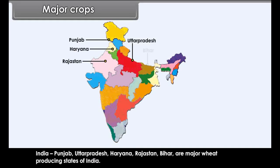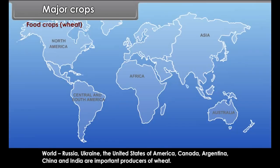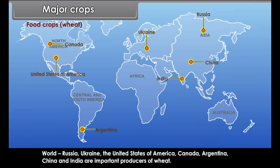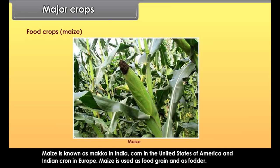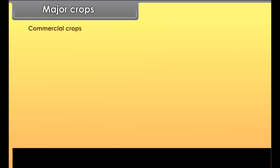Major wheat-producing states of India are Punjab, Uttar Pradesh, Haryana, Rajasthan and Bihar. World producers include Russia, Ukraine, the United States of America, Canada, Argentina, China and India. Maize is known as Makkah in India and corn in the United States.